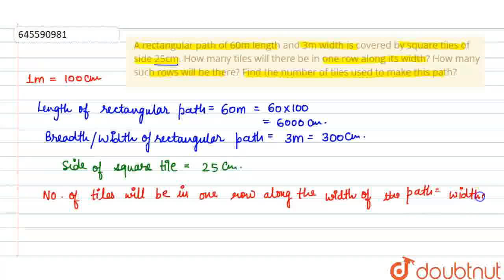Width of the path divided by side of the tile, because both sides are same. So width of the path, which is 300, divided by side of the tile, which is 25, equals 12.